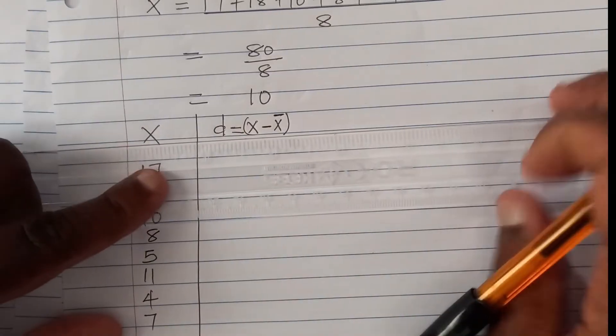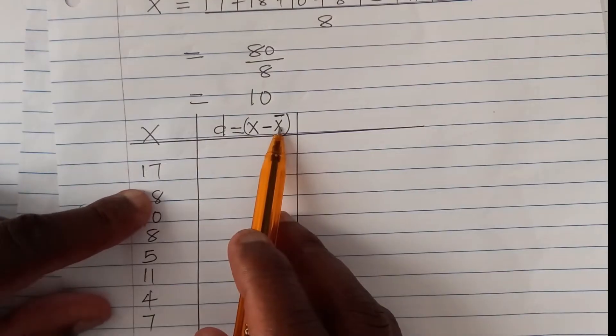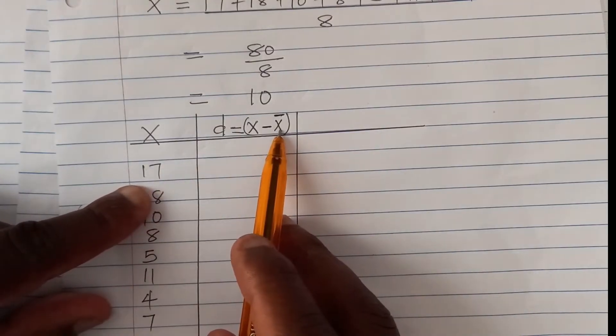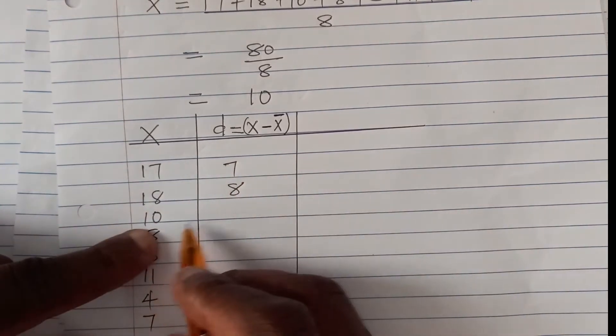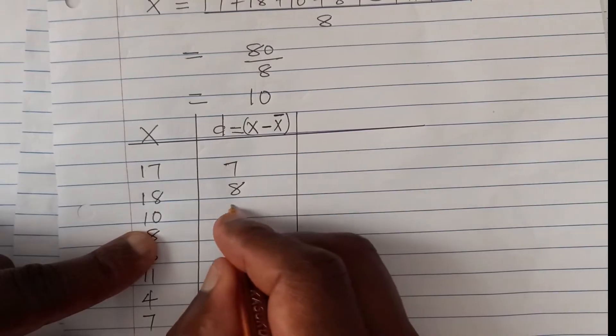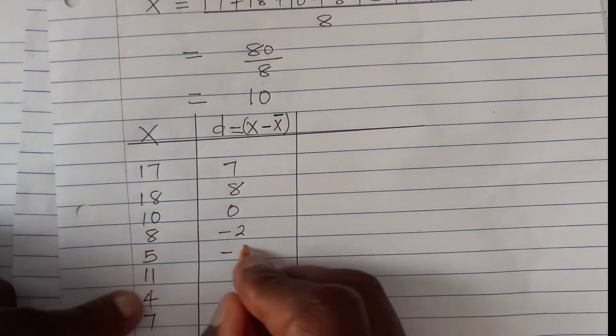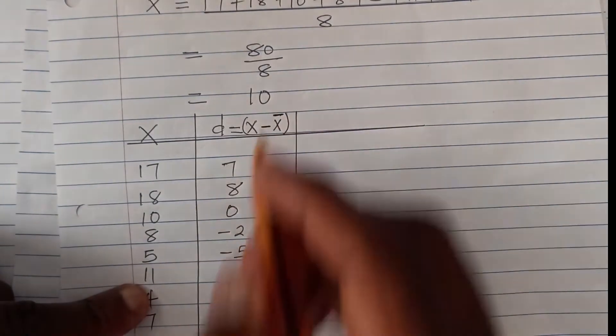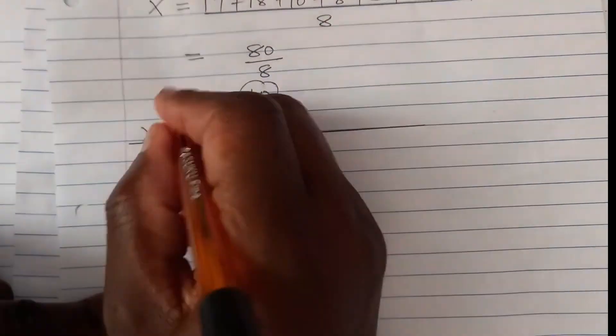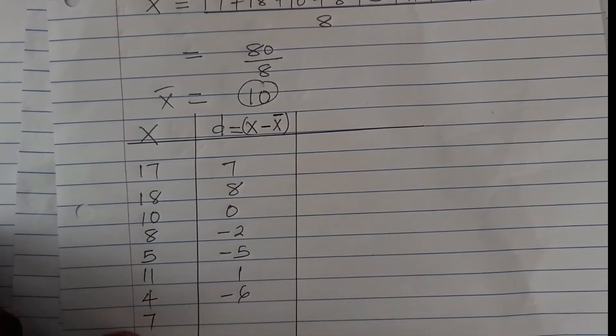So now we can get the deviation from the mean. To get d, you get x minus x bar. x bar is the mean. So 17 minus mean, which is 17 minus 10, you get 7. 18 minus 10, you get 8. 10 minus 10, you get 0. Then you have 8 subtract 10, you get negative 2. 5 subtract 10, negative 5. Then 11 subtract 10, remember 10 is the actual mean, 11 minus 10, you get 1. 4 minus 10, you get negative 6. Then 7 minus 10, you get negative 3.